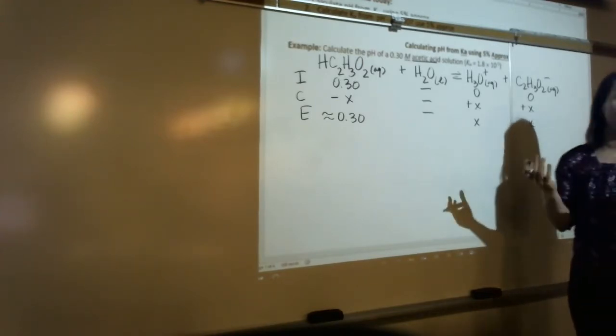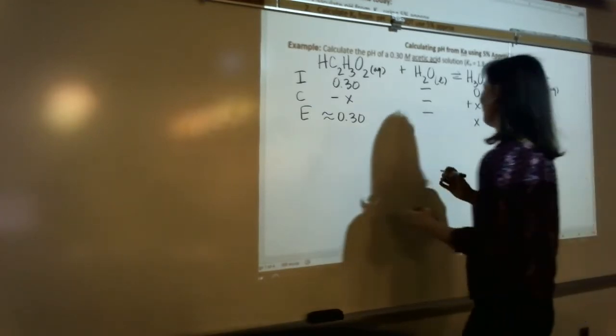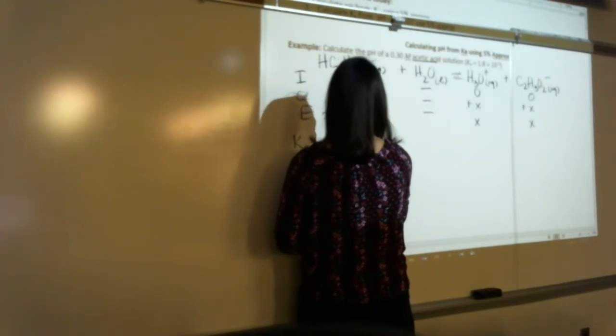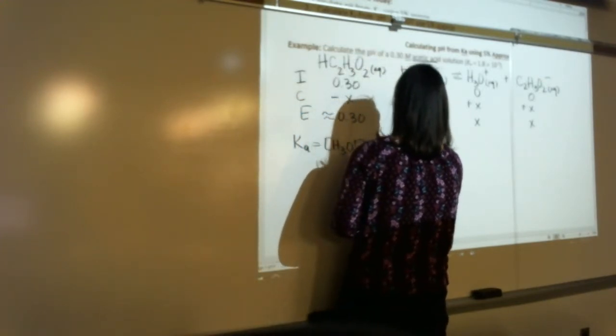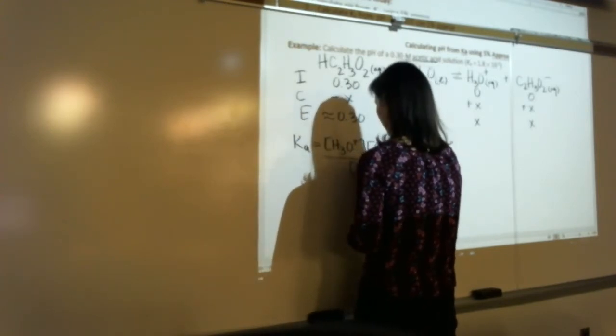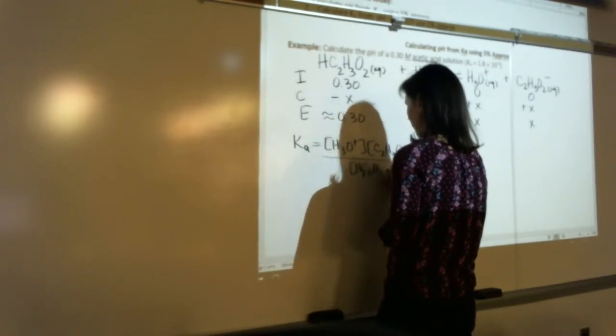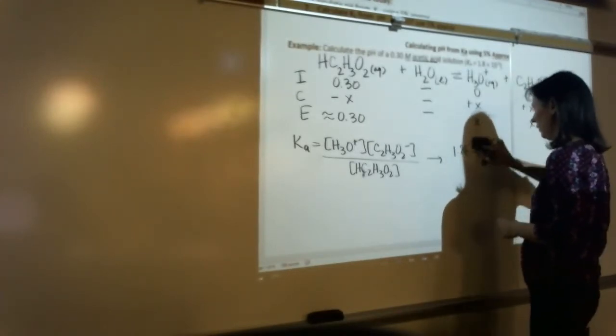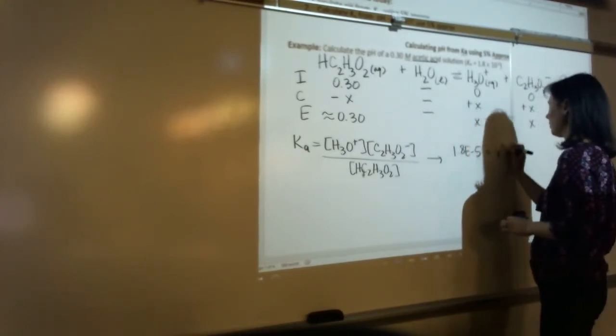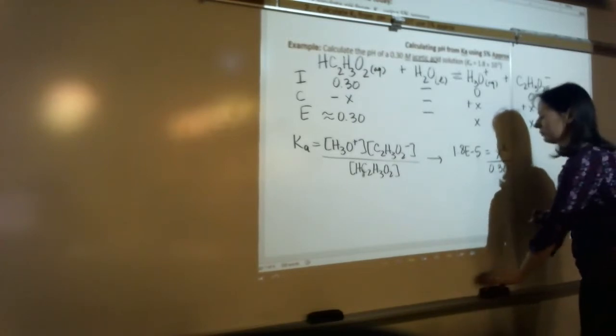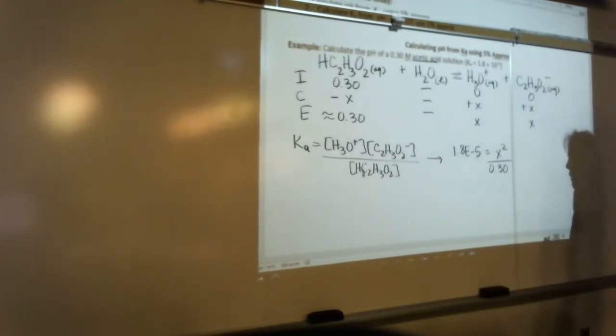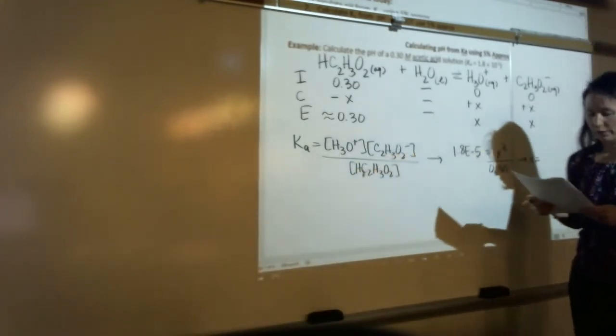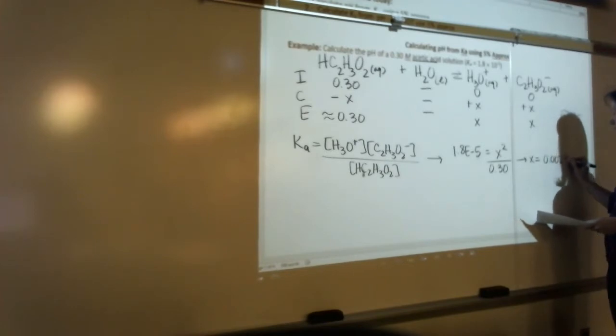So this is really no different than what we did yesterday on the exam. Right? Can we solve for x? Is this something we're capable of doing? I hope so. I haven't graded your test yet, we'll find out. Right? So Ka is equal to the concentration of hydronium times concentration of acetate over the concentration of acetic acid, C2H3O2. So when I plug in my values, 1.8 times 10 to the negative 5th is equal to x squared over 0.30. Do we agree? So when we do our arithmetic, I get x equals, what did I get? I got 0.0023.